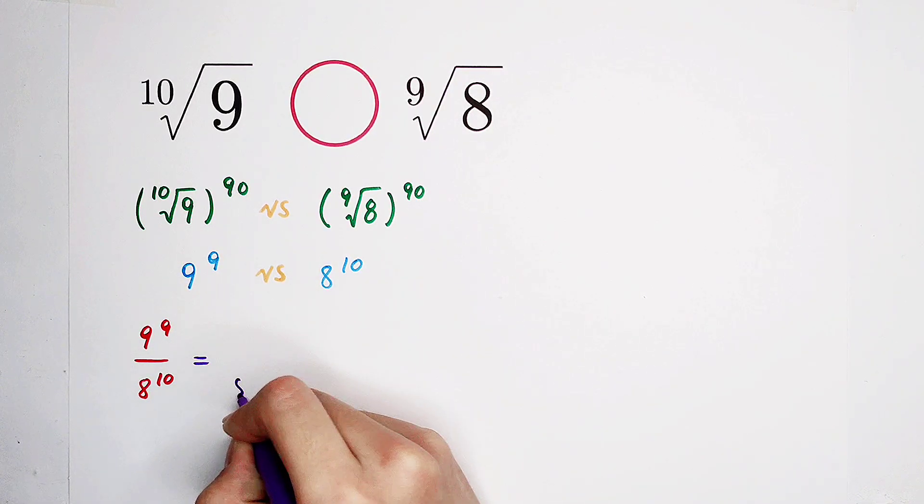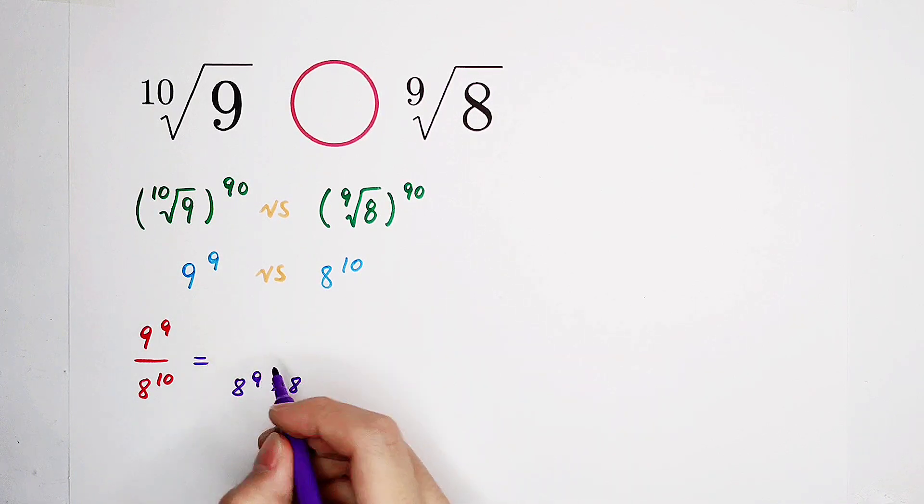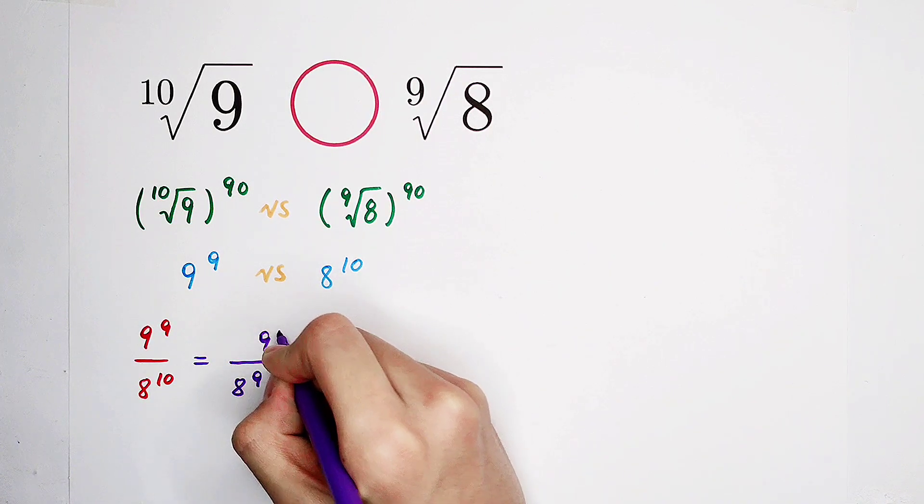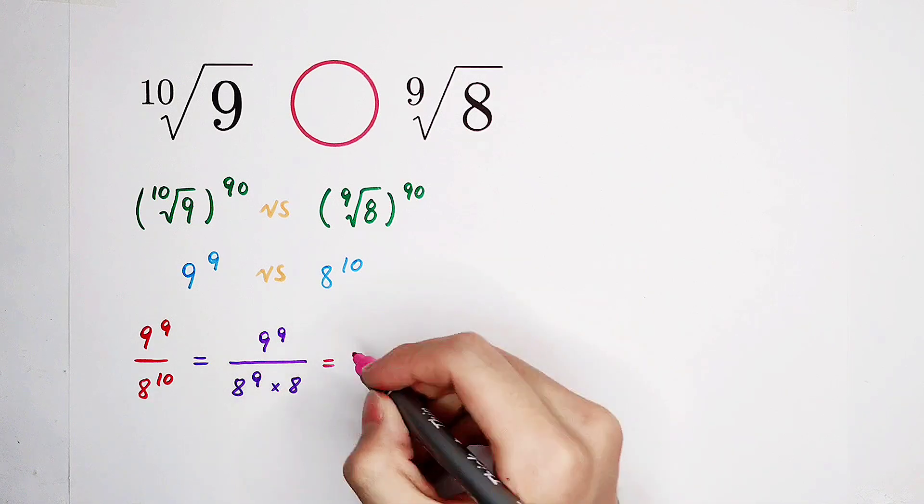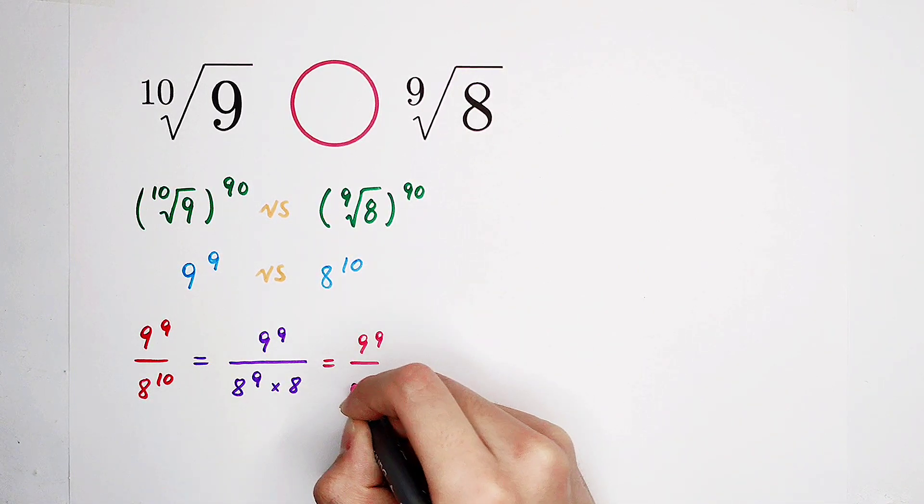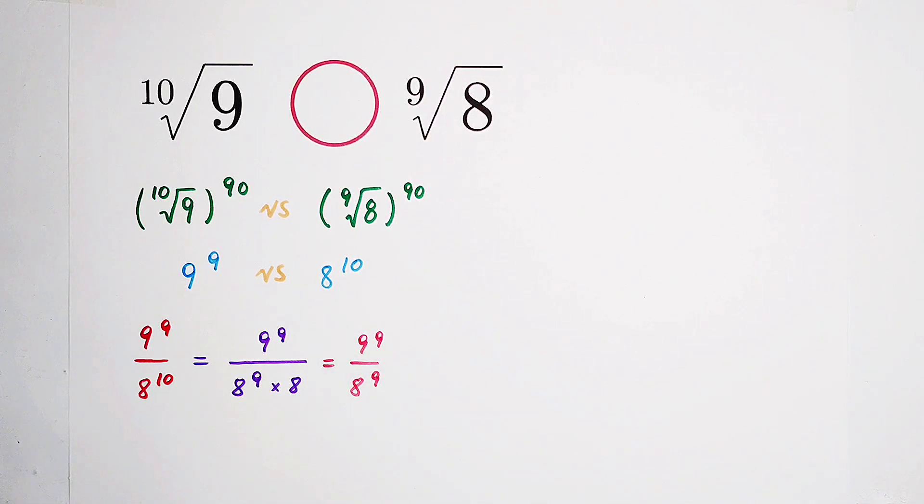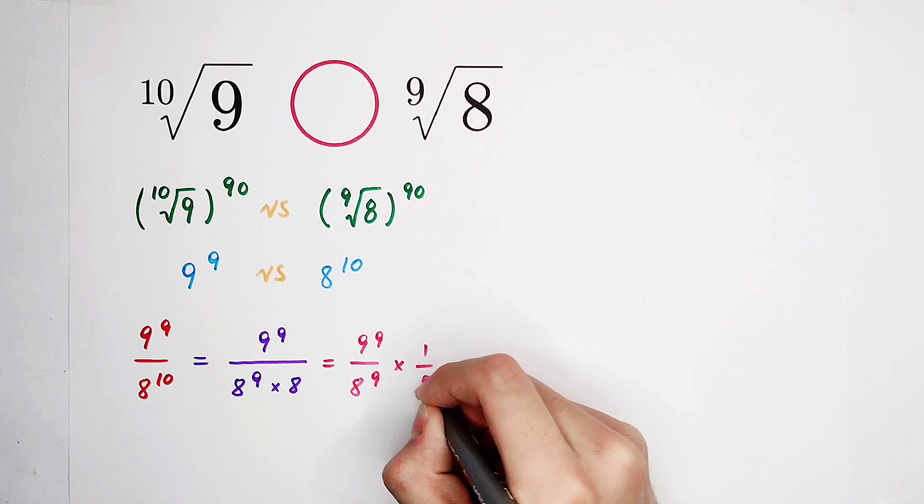So, here is 8 to the power of 9, then times 8. And here, we have still 9 to the power of 9. It can be written as 9 to the power of 9 over 8 to the power of 9, then times 1 over 8.